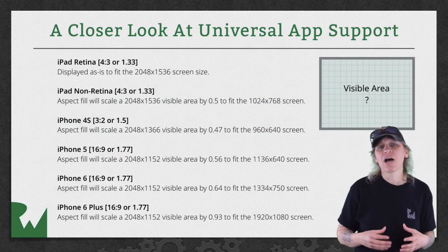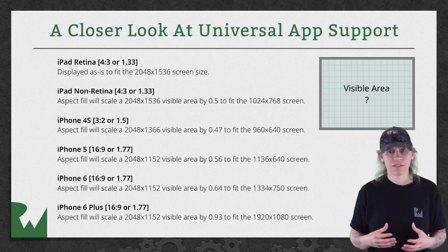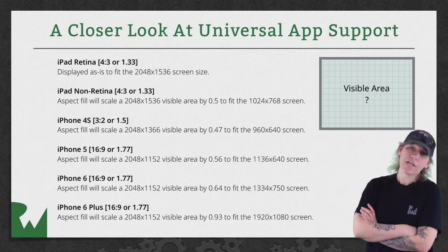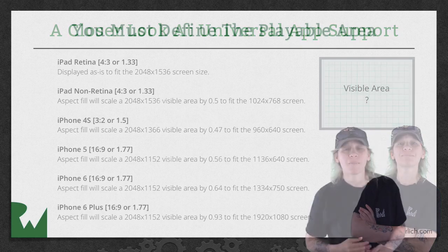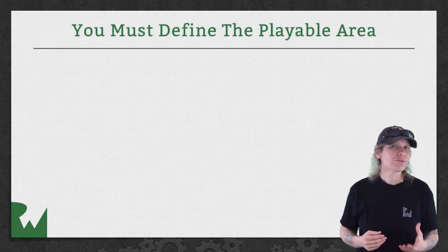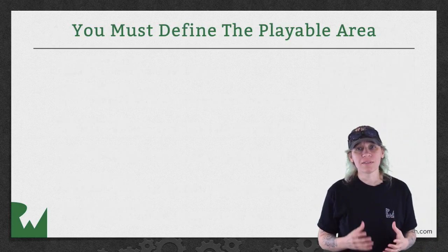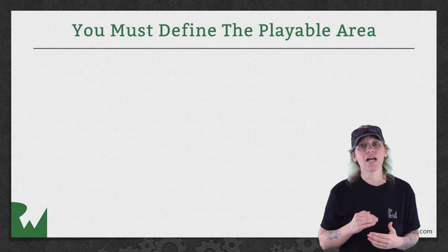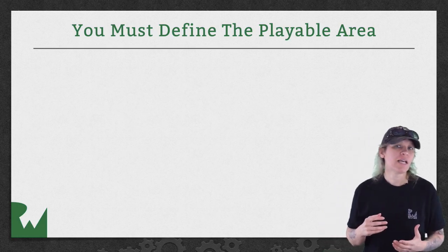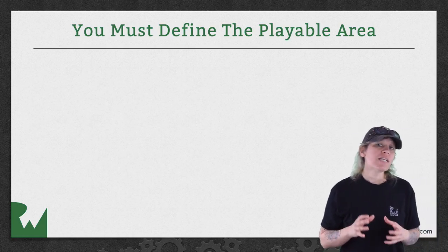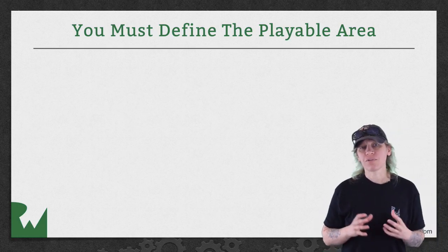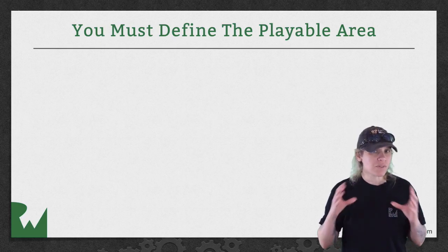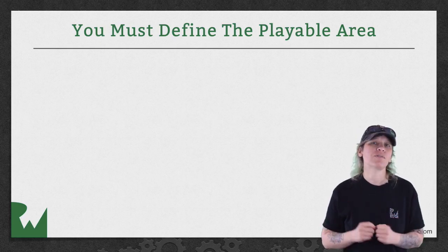Take a closer look at how this looks for the rest of the devices. Go ahead and pause the video — I'll wait here while you look. So as you saw, Aspect Fill will crop the scene at the top and the bottom for the iPhones. That being the case, you'll need to define the playable area for the game — that is, the area that's guaranteed to be visible on all devices.